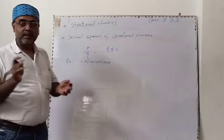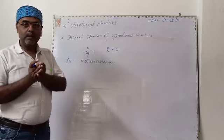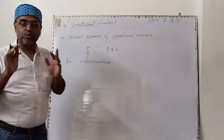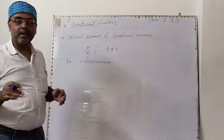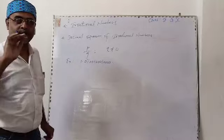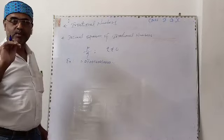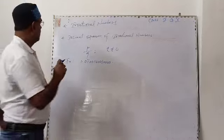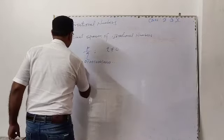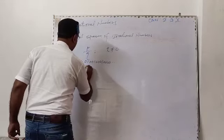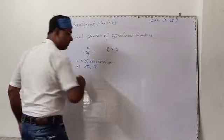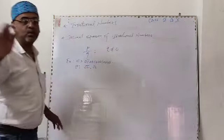Now there may be other types of irrational numbers that you should understand. Let me take some more examples. The second type of example is in the form of root 2, root 3, root 5, root 7, and so on.